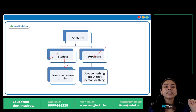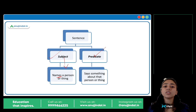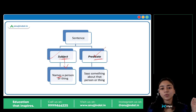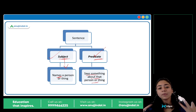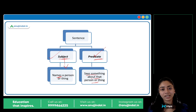A subject names something — it names a person or a thing, it introduces us to something. And the predicate says something about that person or thing — it gives us additional information about the subject.